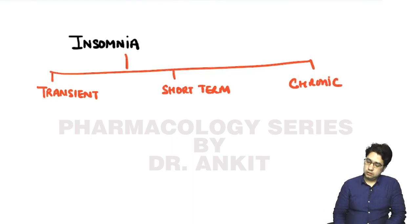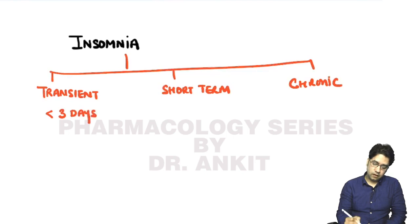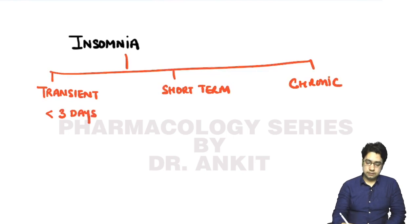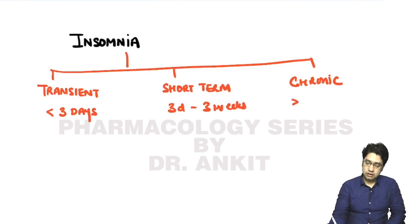In transient insomnia, the person is unable to sleep for up to three days. Short-term insomnia lasts from three days to three weeks. If a person is unable to sleep for more than three weeks, it is known as chronic insomnia.